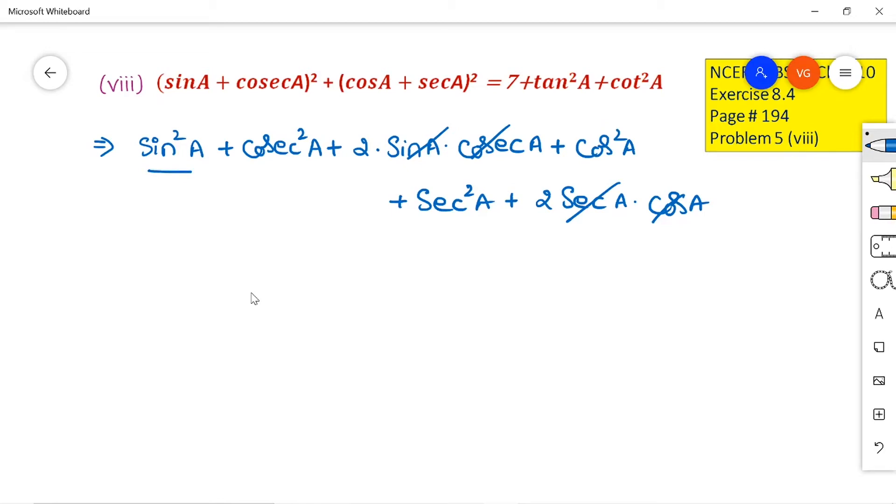And we know sin²A and cos²A makes 1. So, that I am writing 1 plus here plus here I have 2 left over here and again here I have 2 left that I am writing here 2 plus cosec²A plus sec²A.